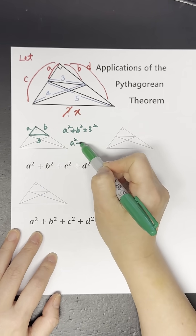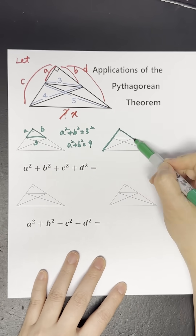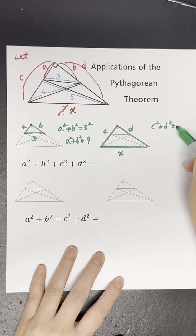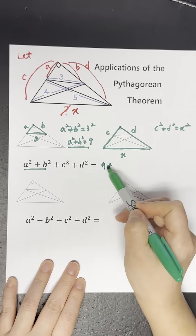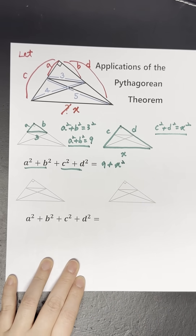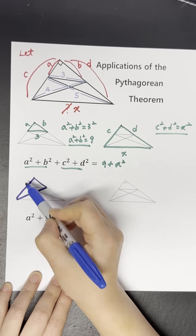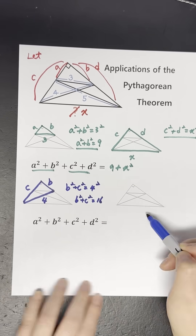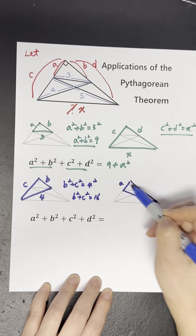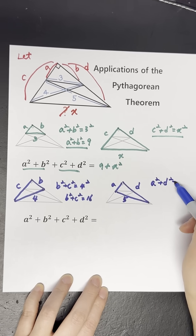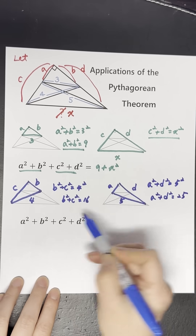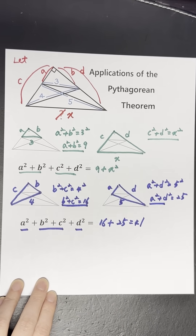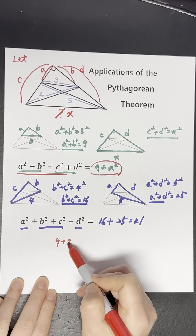We'll be using the Pythagorean theorem four times throughout the video, and the second one to find 9 plus x squared. Let's keep going! 9 plus x squared must equal 41.